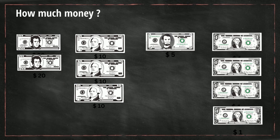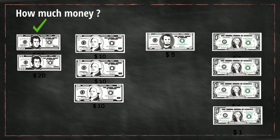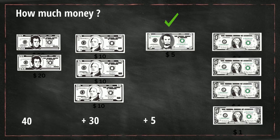With this example, we have two twenties, three tens, one five, and four dollar bills. So let's total this up. The twenties: 20, 40 dollars. The tens: 10, 20, 30 dollars. Then the five: 5. And then four one dollar bills: 1, 2, 3, 4. When we total this up, it gives us a total of $79.